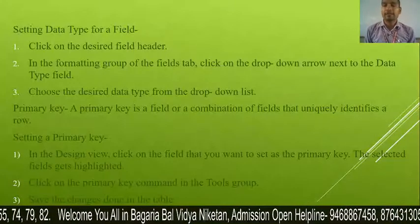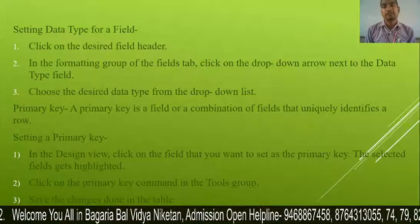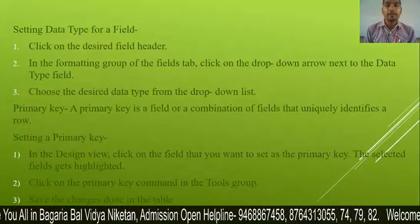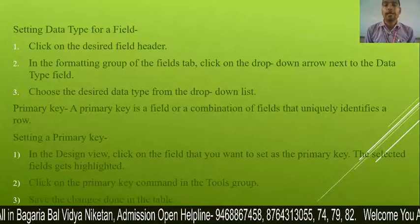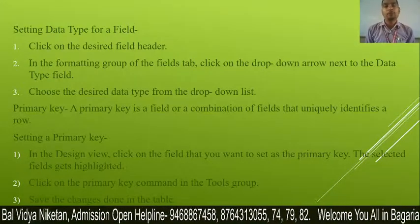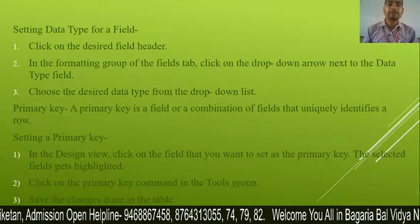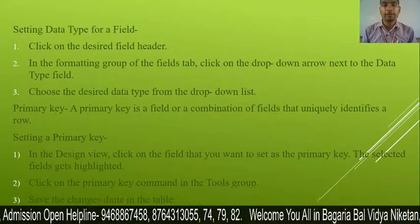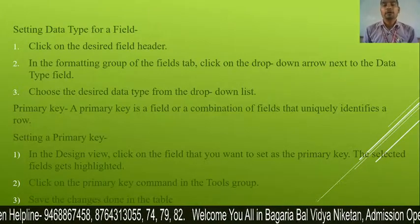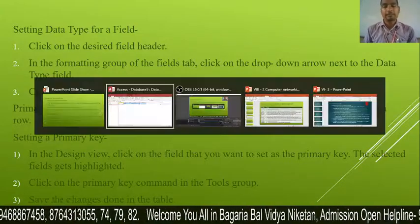Click on the desired field header. Then in the Formatting group of the Fields tab, click on the drop-down arrow next to the Data Type field and choose the desired data type from the drop-down list.